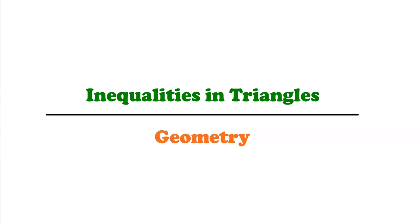So far, a lot of our exploration of geometry has taken place from a point of view of certainty. We want to know if two triangles or two figures are congruent, so we use the congruence postulates. We can calculate angle sizes using parallel lines and transversals, and calculate scale factors, angle sizes, and segment lengths for similar figures. This video is a little bit different — it's going to focus on aspects of triangle geometry that don't result in certainty, but in a range of possible options, and we're going to focus on some inequalities that exist in triangles.